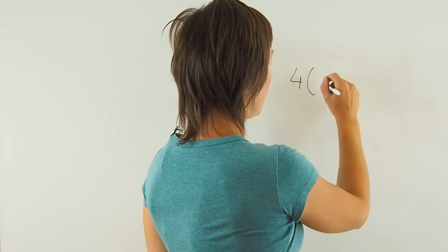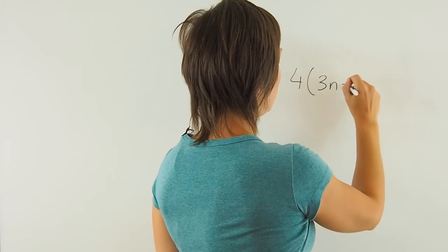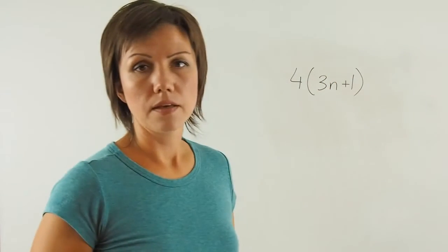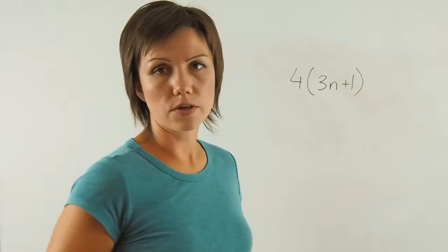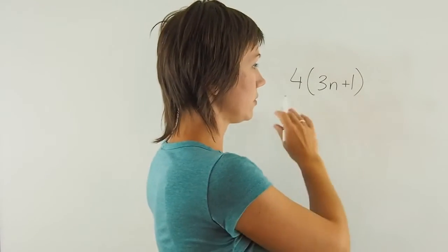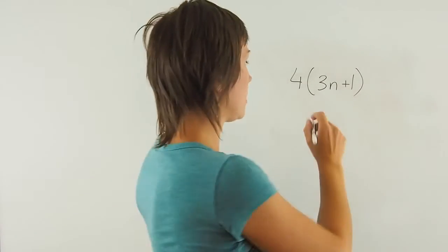4 times 3N plus 1. I need to distribute 4 over each term inside the bracket in order to get rid of this bracket.